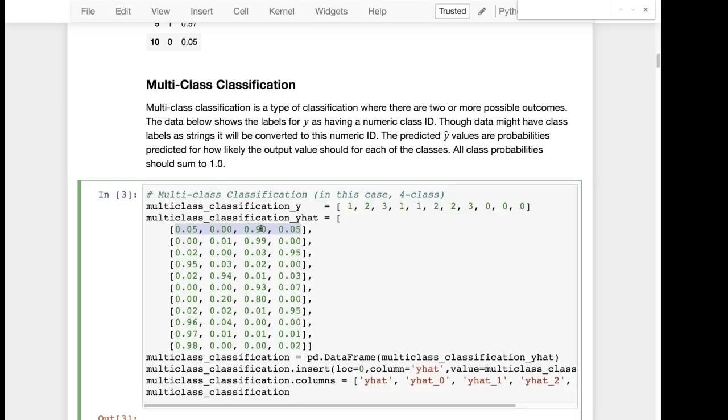If you were really sure but you thought it was maybe one of these two but you have no idea you'd set both of these to 0.5 and 0 on the outer two.